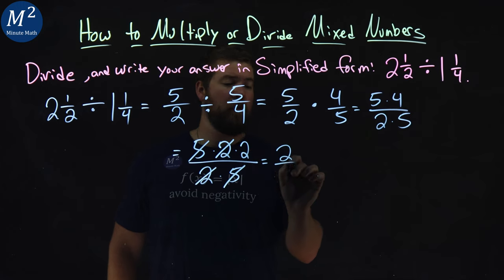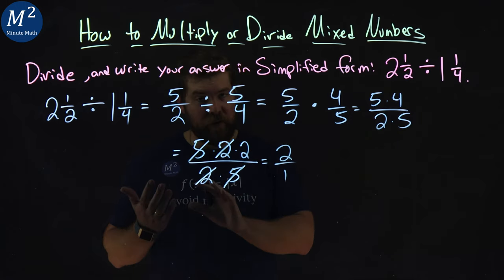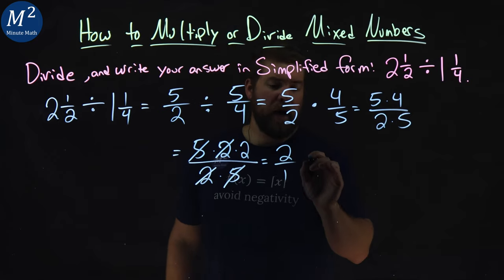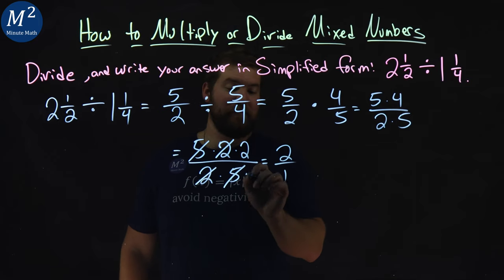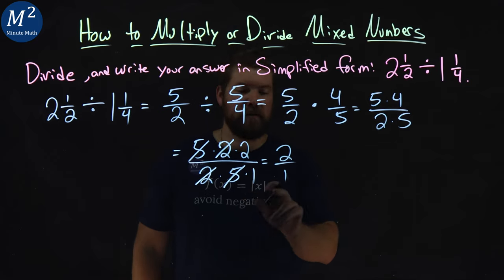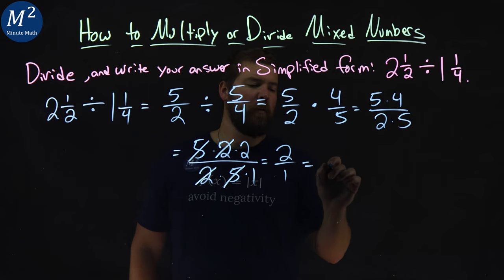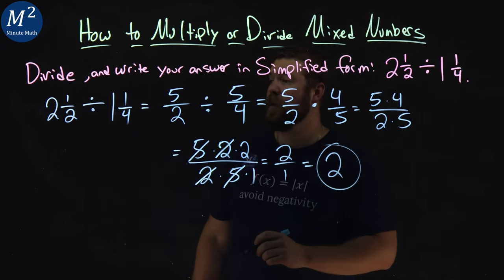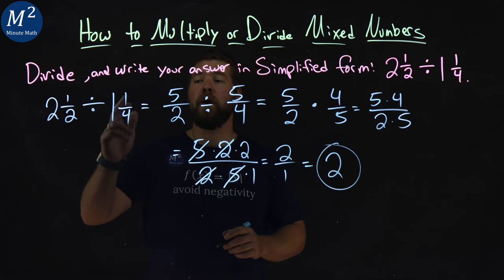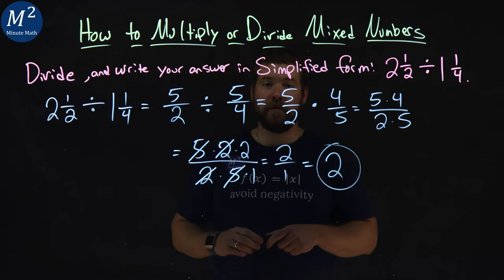We're left with two over one. What's left over really? Not divided by zero. There's a one there. And if you want to see that, multiply by one doesn't change it. But two over one is just two. And there we have it. Two and one half divided by one and one fourth is equal to two.